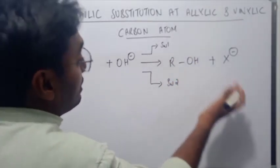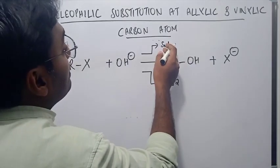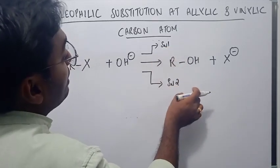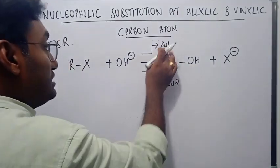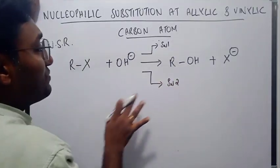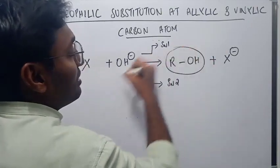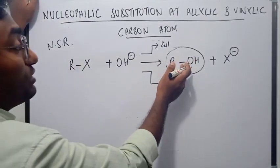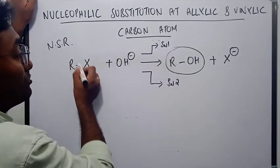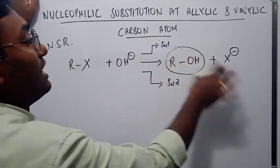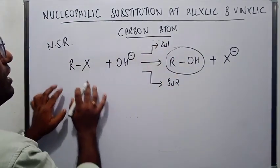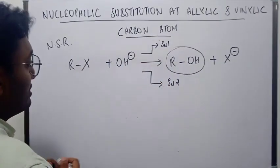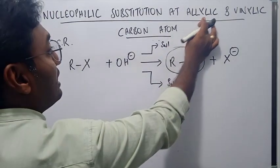The product of the SN2 route is an inverted product, while the SN1 route gives both inverted and retained forms. Whatever the configuration, whichever route the reaction takes, the final product here is an alcohol — whether primary, secondary, or tertiary depends upon the R group used. If you want to know more about nucleophilic substitution reaction, kindly refer to my earlier videos on SN1 and SN2 reactions. Now let us look at nucleophilic substitution at allylic and vinylic carbon atoms.